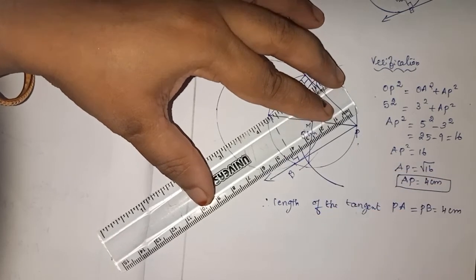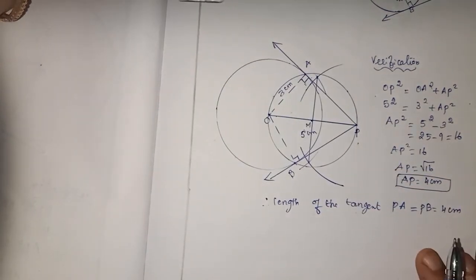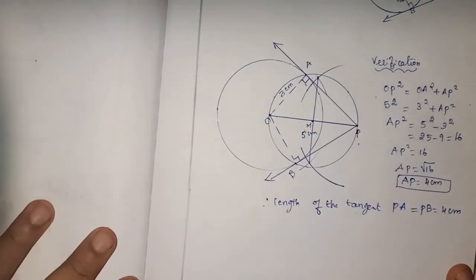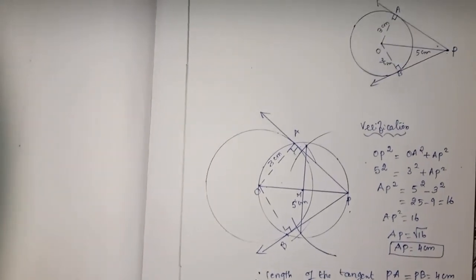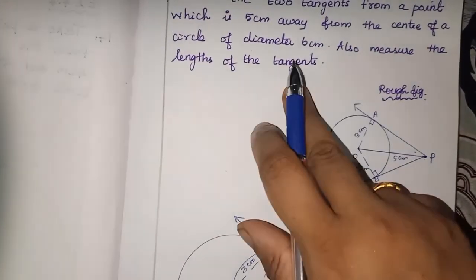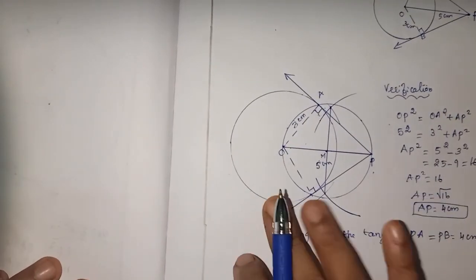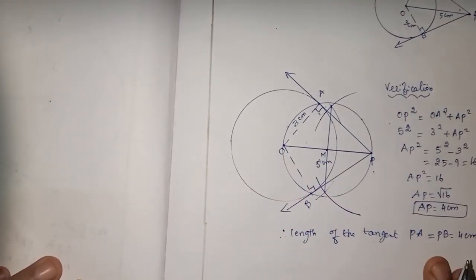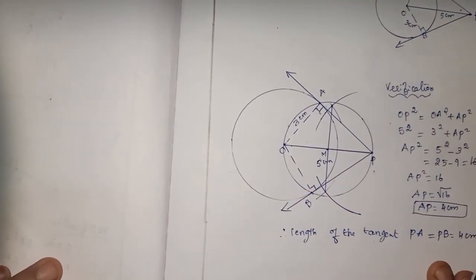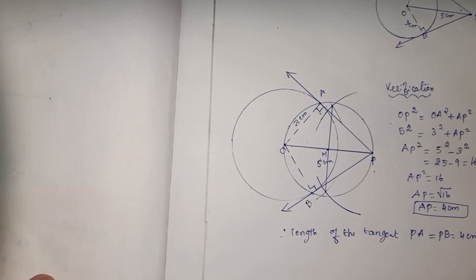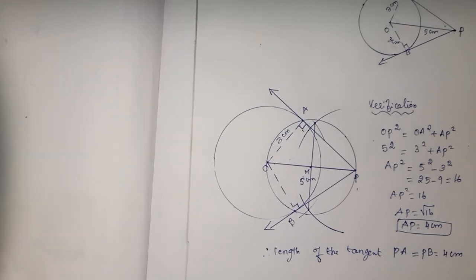The tangent measures exactly 4 cm. So we have constructed the tangents. It is a very very easy sum. Be careful about converting diameter into radius before drawing the circle. Any doubts, put them in the comment box. Please like and subscribe to my channel — thank you.